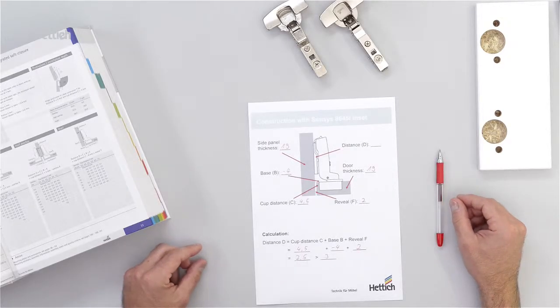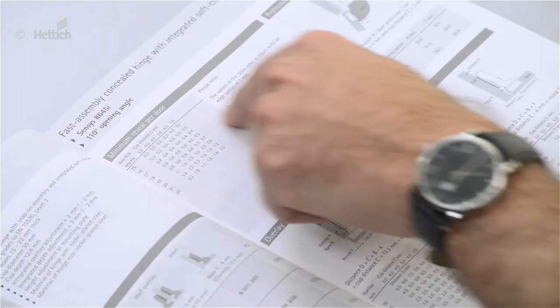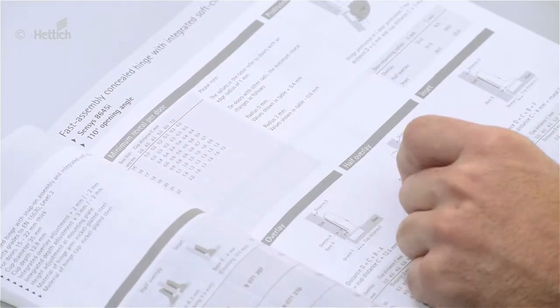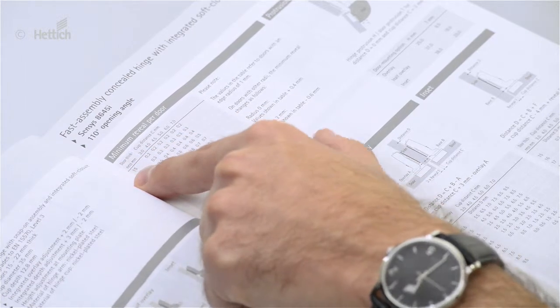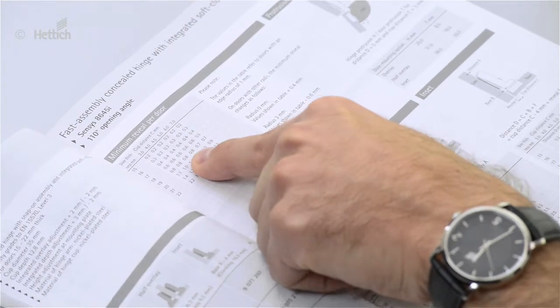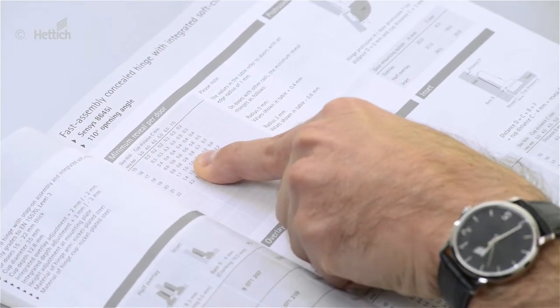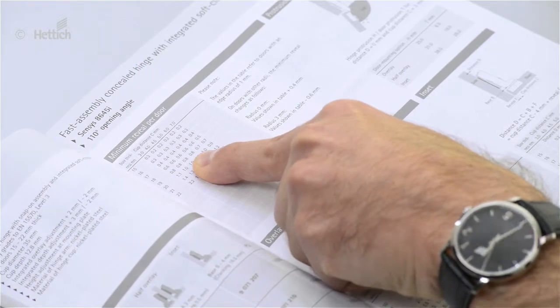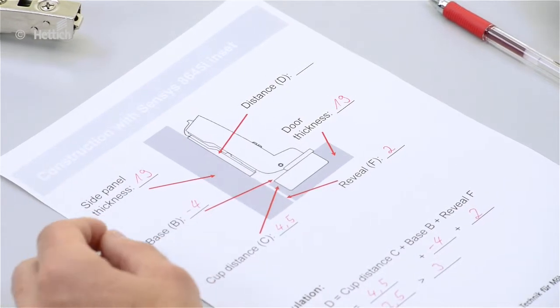In the last step we have to cross check the minimum reveal. Therefore we go back to the catalog. There's a little table that shows the minimum reveals. The door thickness in the example was given with 19 millimeters and the cup distance C with 4.5 millimeters. So that's the minimum reveal of 0.8 millimeters. And in the example we had 2 millimeters so the application can be realized.